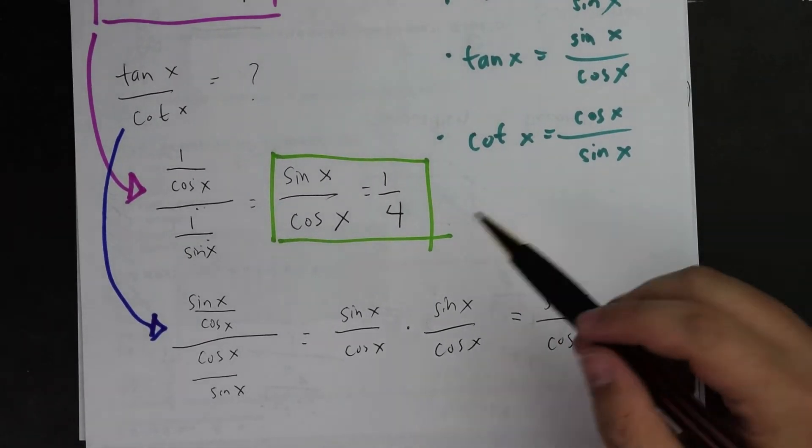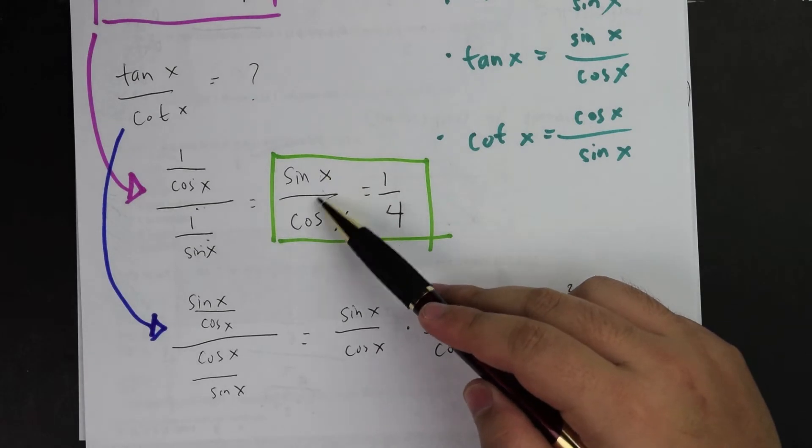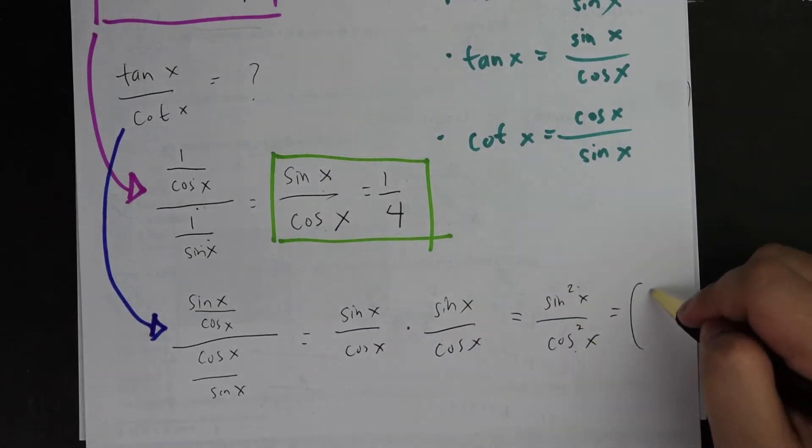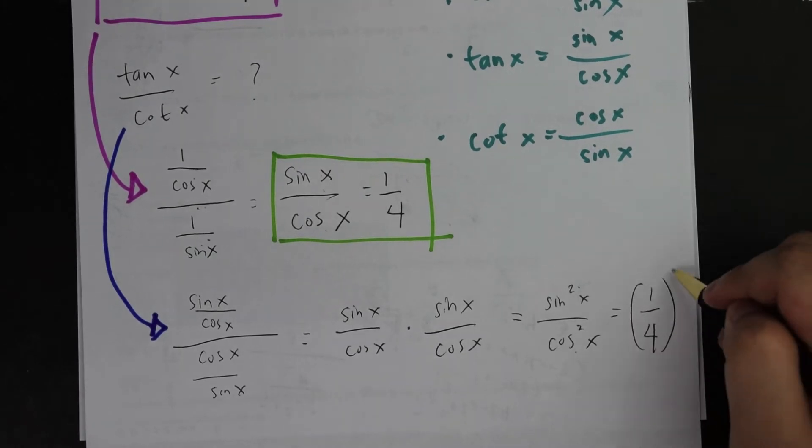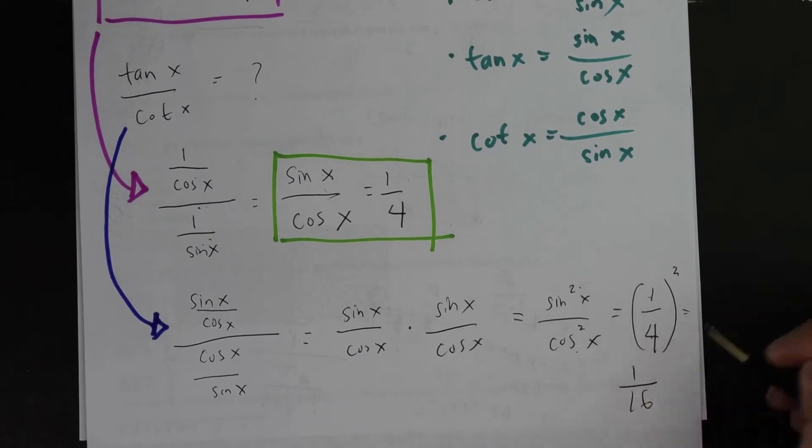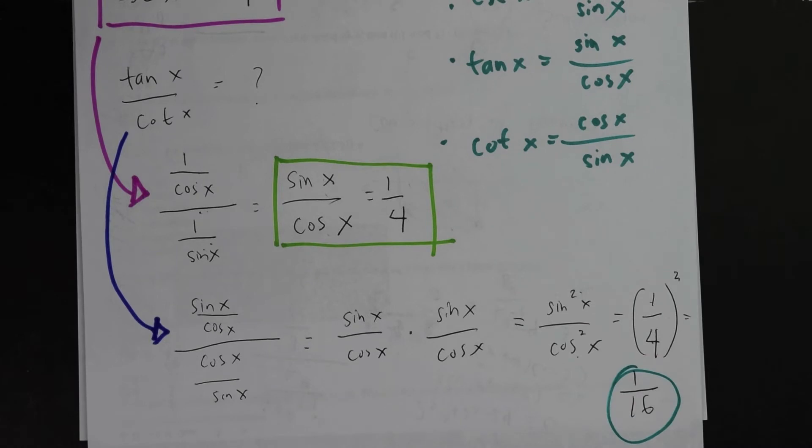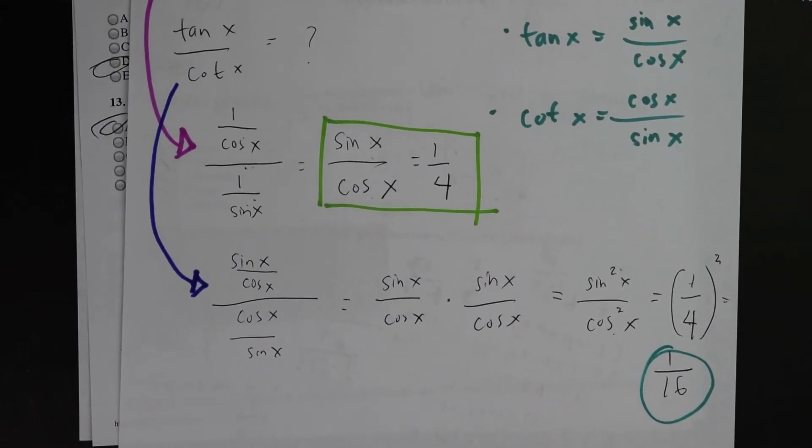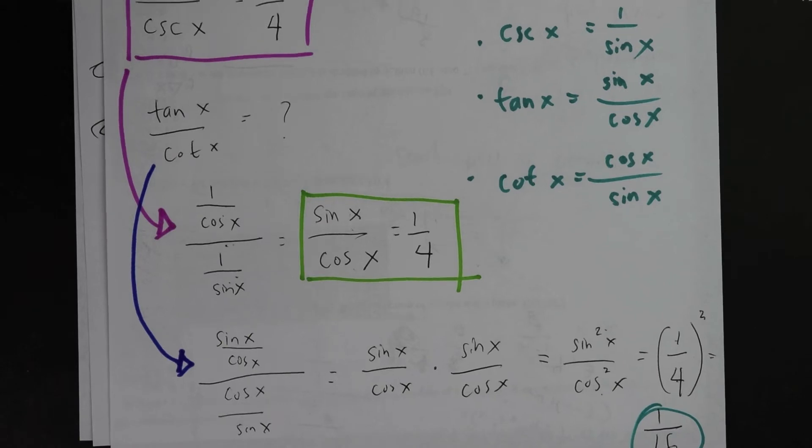The way you're going to do this is if you notice sine x over cosine x equals 1 fourth. These are both squared. So technically I could take this and square both top and bottom. It will be 1 squared over 4 squared, which is how I got my final answer of 1 over 16th. That concludes my explanation.